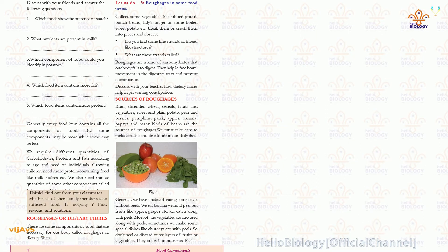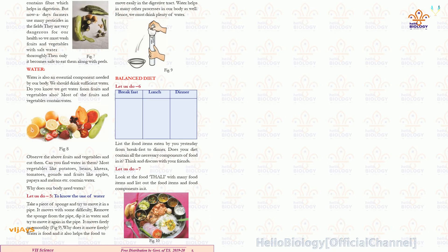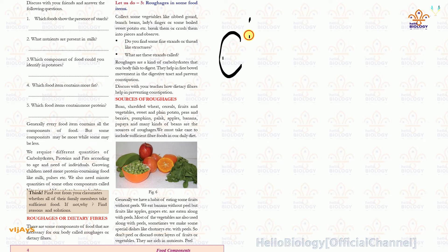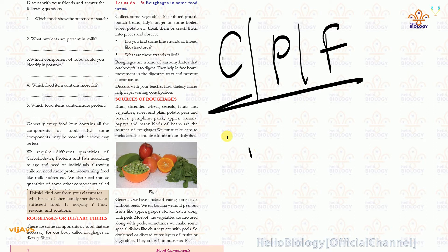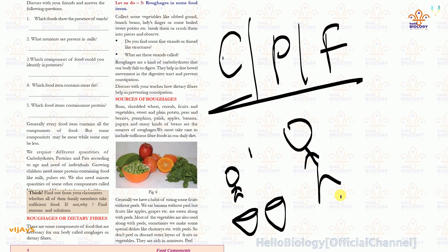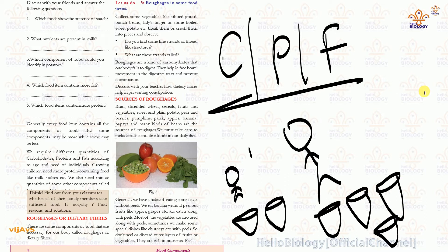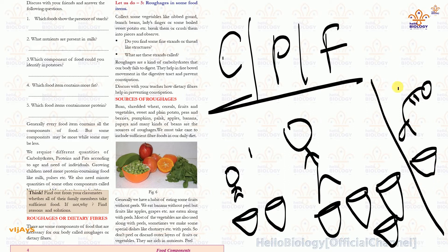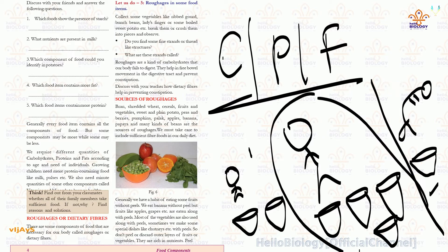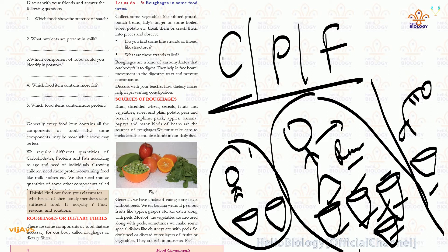We require different quantities of carbohydrates, proteins, and fats according to our age. If you are young, one or two cups of food may be sufficient. If you are an adult, you require more, because adults do more work. In old age, you again require less food because you cannot do much work. At your age — younger age — you need more energy because you are playing, running, and doing all your activities, so more food is needed.